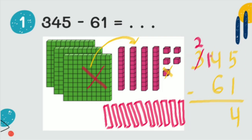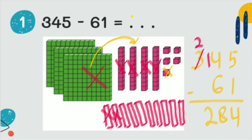Now fourteen minus six — we cross out six tens, counting one through six. We have eight tens remaining. Two minus zero, so we have two hundreds. The answer is two hundred eighty-four.